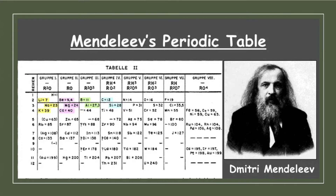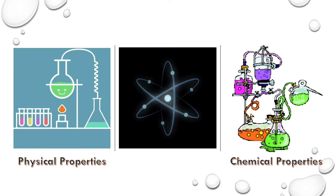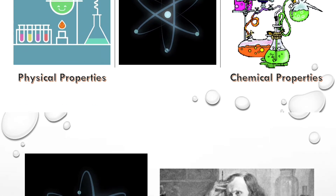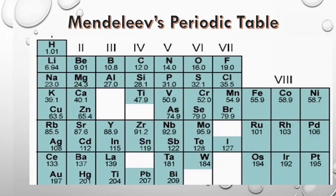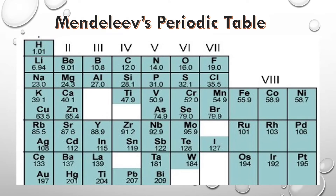Dimitri Ivanovich Mendeleev, a Russian chemist, put forward a periodic table called Mendeleev's Periodic Table. Mendeleev examined the relationship between the atomic masses of the elements and their physical and chemical properties. He believed that atomic mass was the most fundamental property for classifying elements. He arranged the known elements in increasing order of their atomic masses and thus created the first periodic table containing 63 elements, known as Mendeleev's Periodic Table.